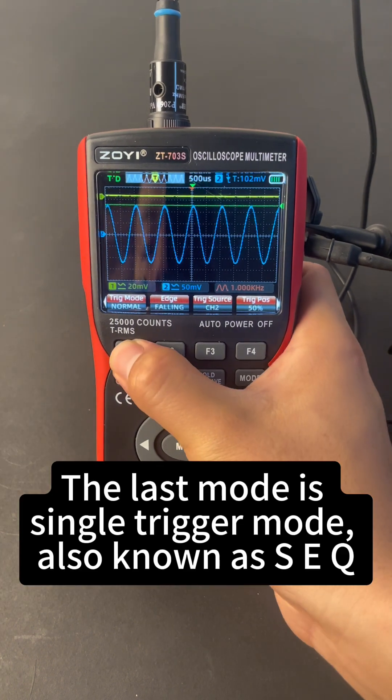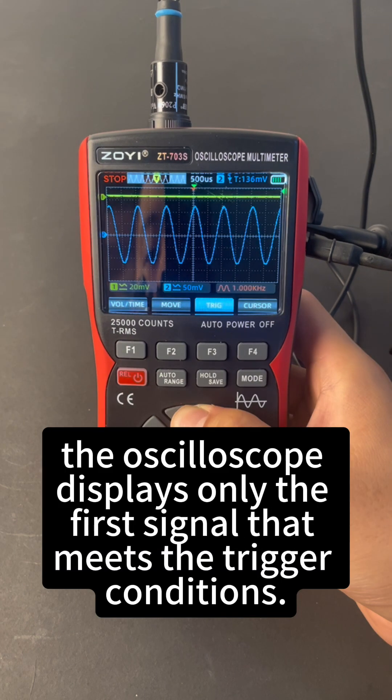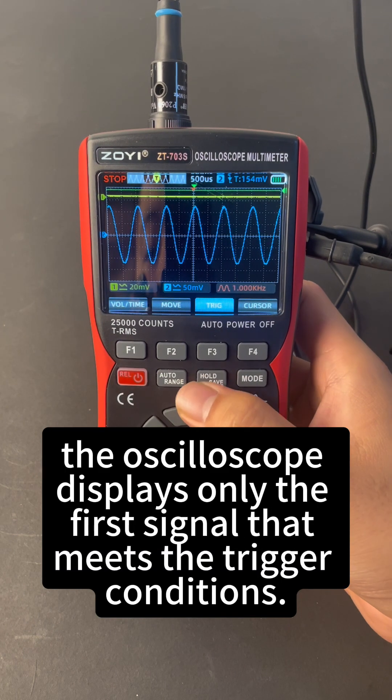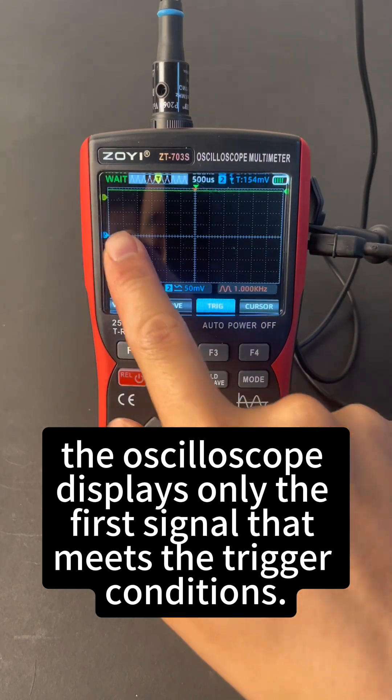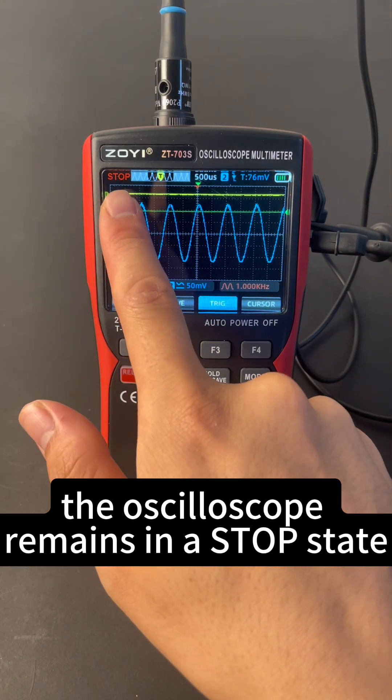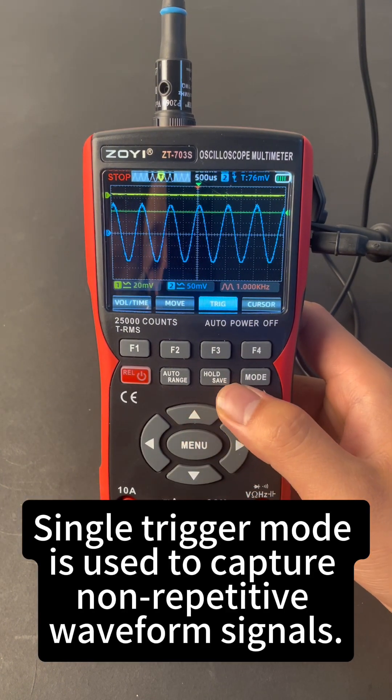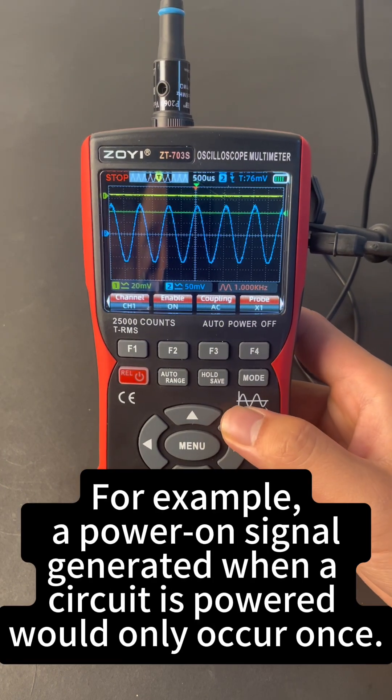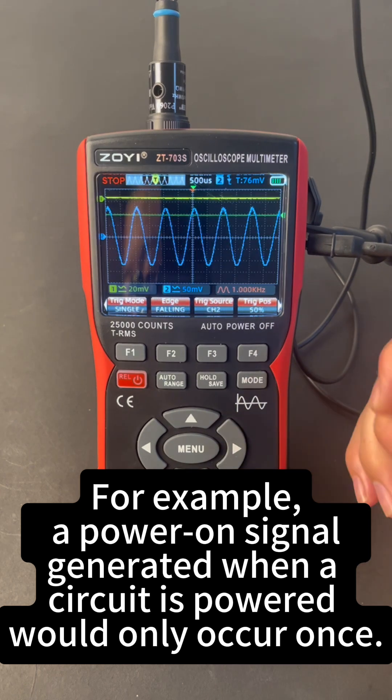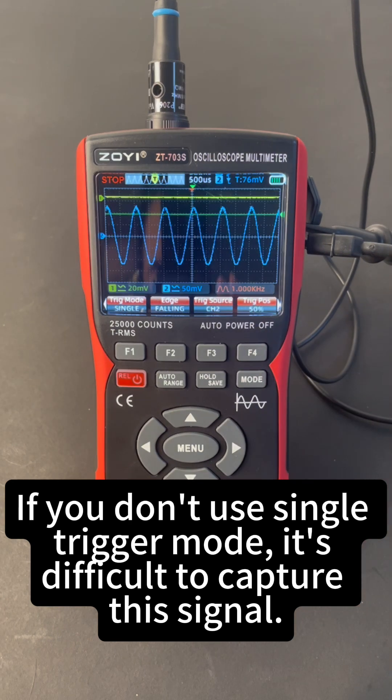The last mode is single trigger mode, also known as SEQ. In this mode, the oscilloscope displays only the first signal that meets the trigger conditions. Afterwards, the oscilloscope remains in a stop state. Single trigger mode is used to capture non-repetitive waveform signals. For example, a power-on signal generated when a circuit is powered would only occur once. If you don't use single trigger mode, it's difficult to capture this signal.